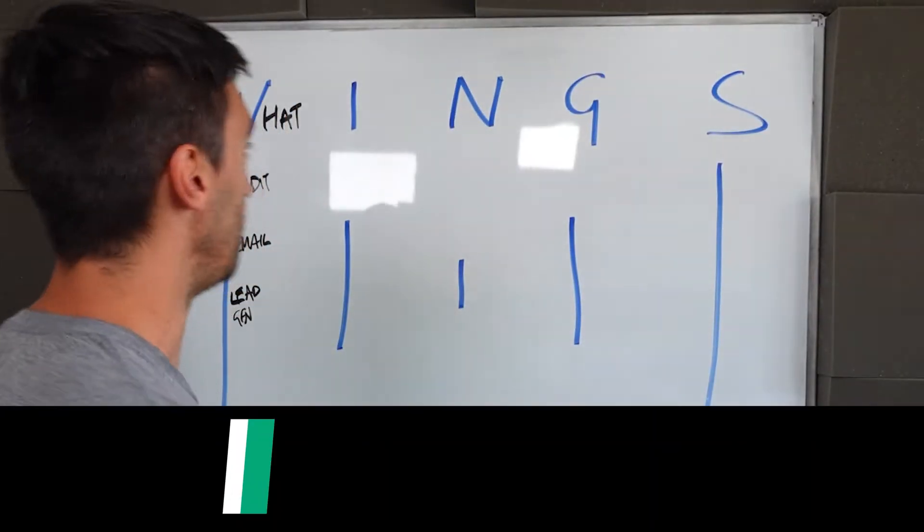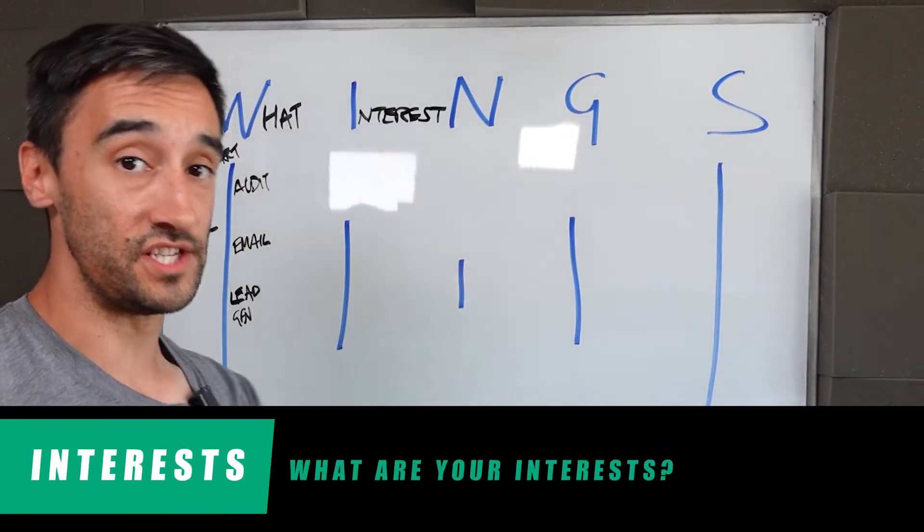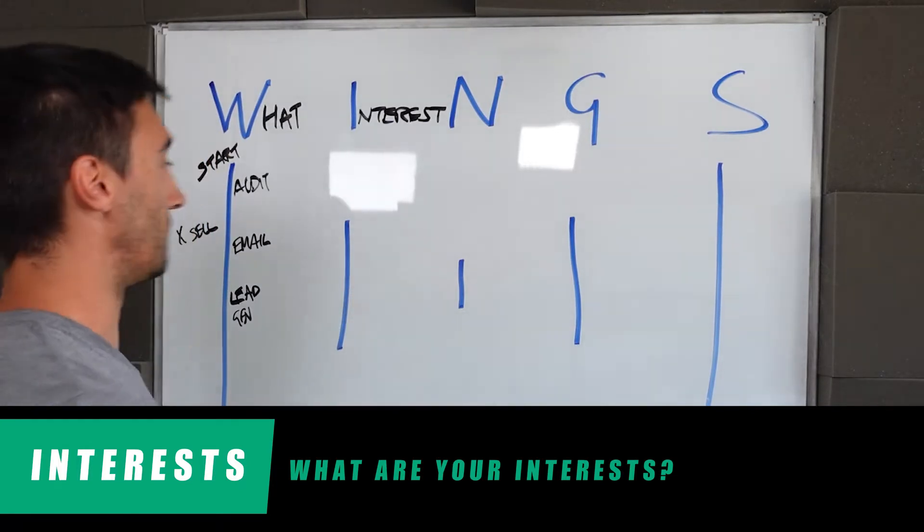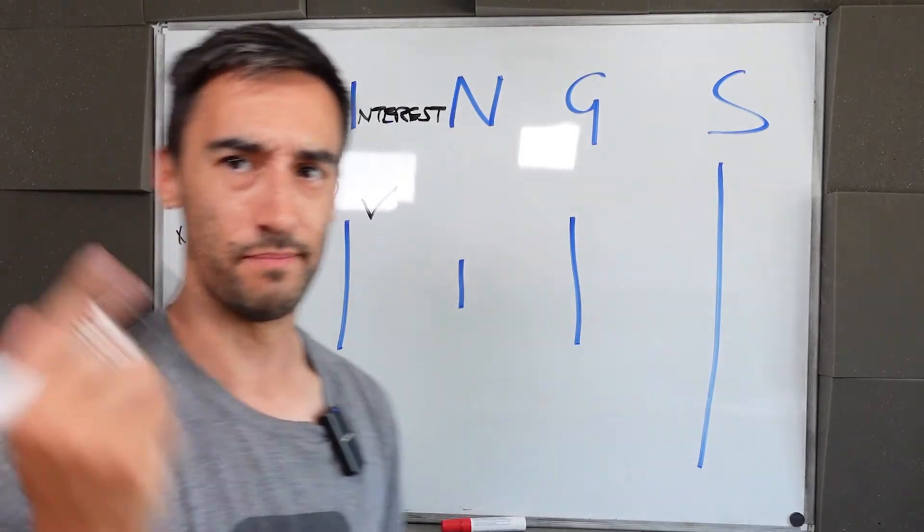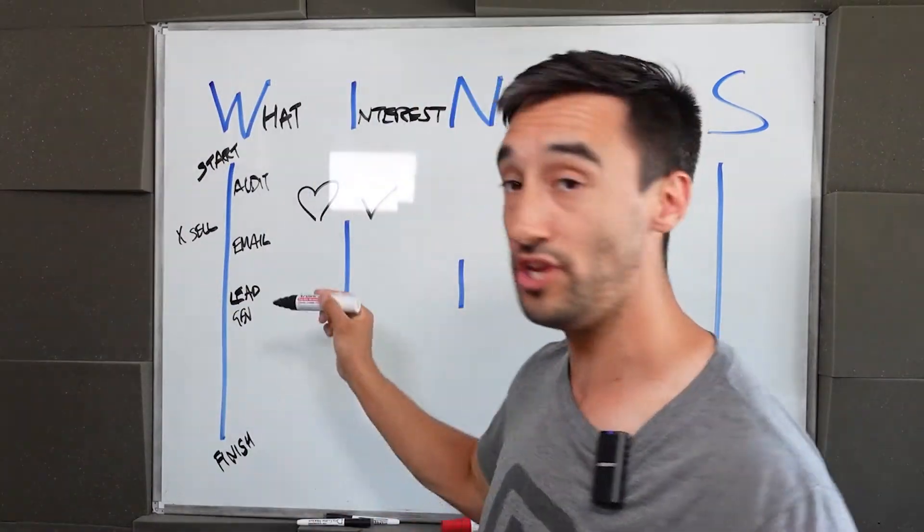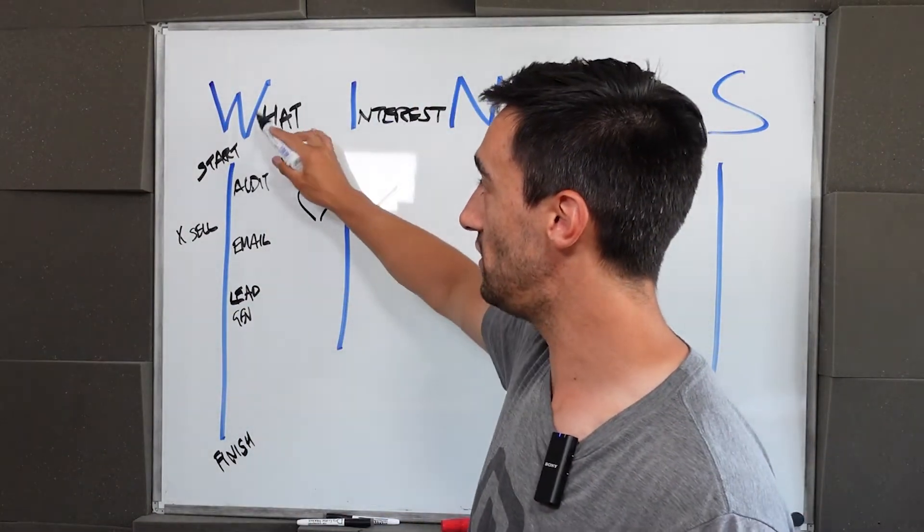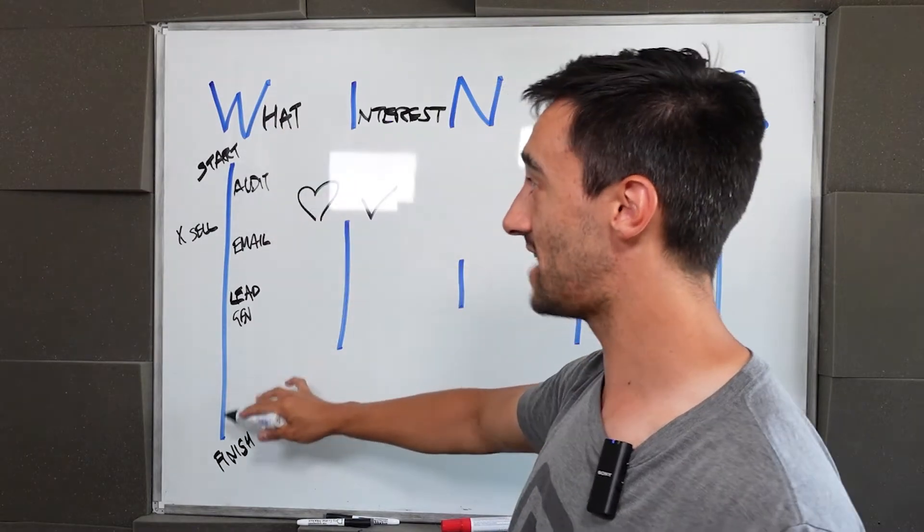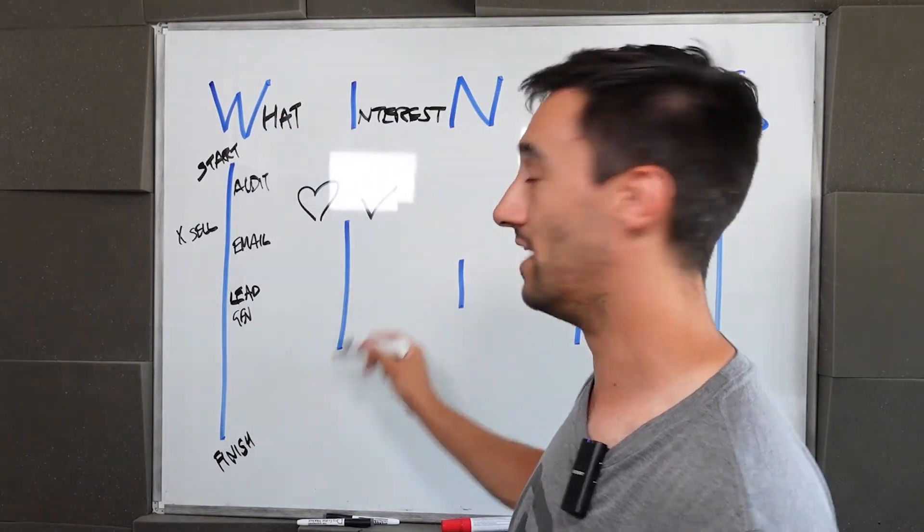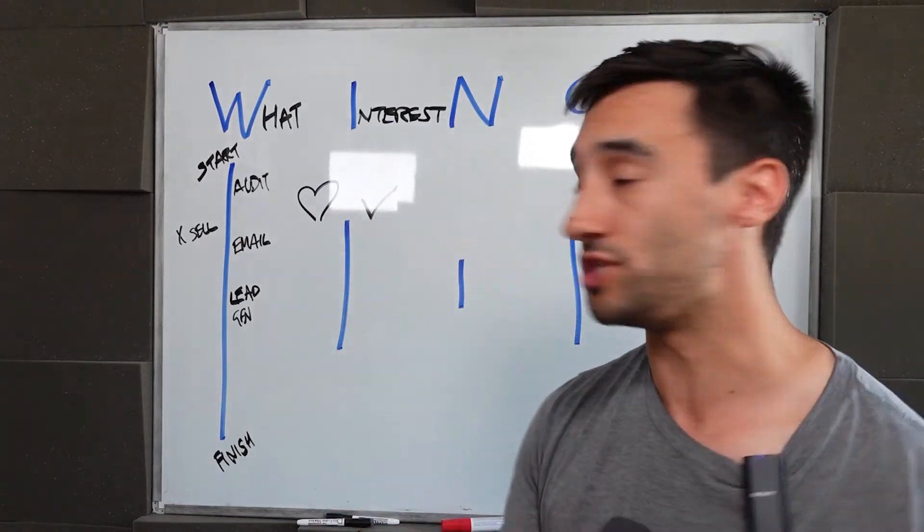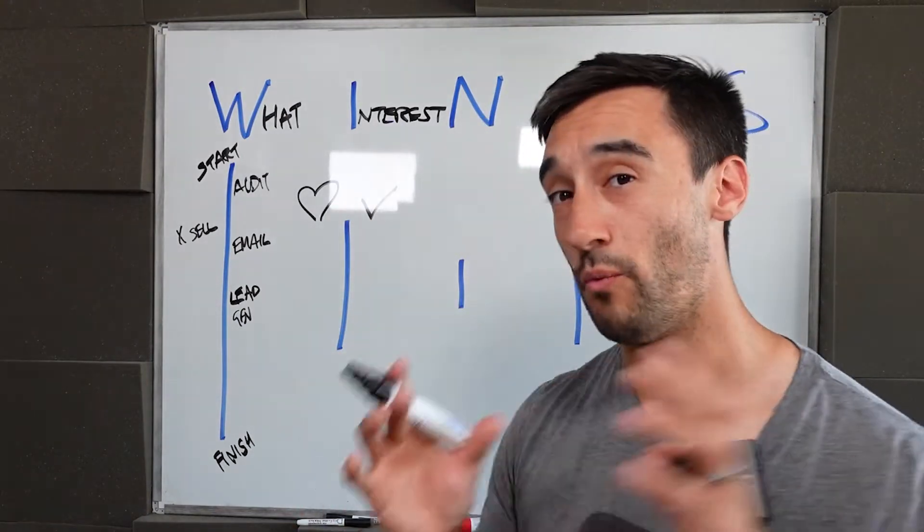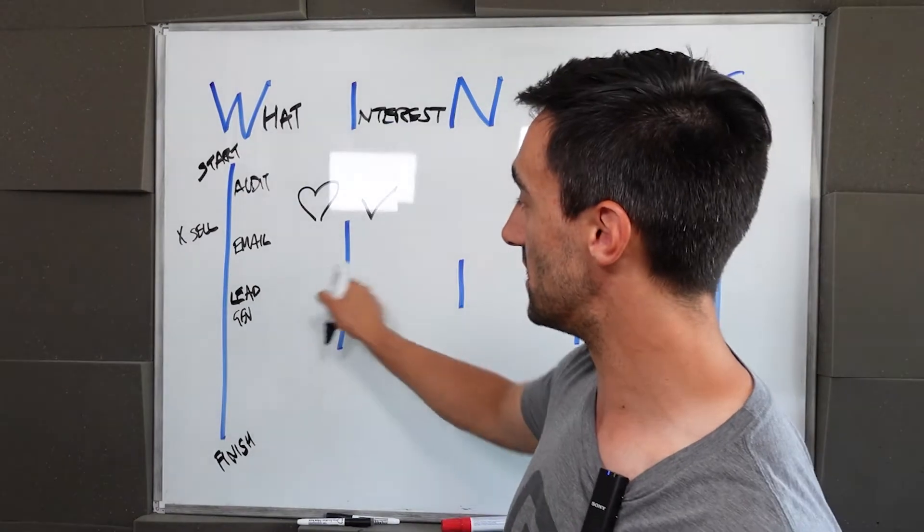The second stage is interests. What this means is two things. We're going to use both sides of the line here. We're going to use love and things that you're good at. I want you to take everything that you've put on the what axis here and move it over. Now, if you love doing it, put it on this side. If you're good at doing it, put it on this side. And what we're going to try and look for is something that does both of them.